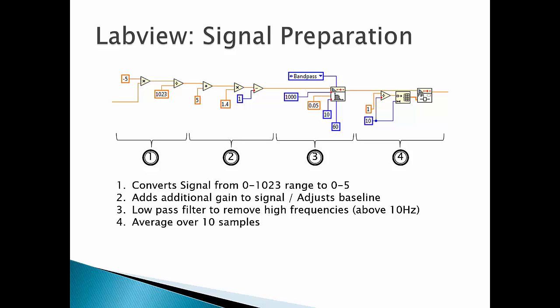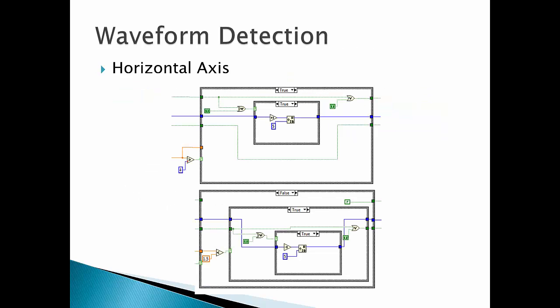So now on to LabVIEW. Once the signal passes into LabVIEW there's several things we have to do to actually get the signal ready before we detect waveforms from it. The first is that we need to convert the signal from the 0 to 1023 range that the Arduino sends to the computer into a range of 0 to 5 volts. The second block here just adds additional gain to the signal and also adjusts the baseline. Then there is a filter to remove frequencies above 10 hertz. This gets rid of all of the power line frequency that would normally cause noise within a system. Finally we just have an averager which averages over 10 samples to smooth the signal.